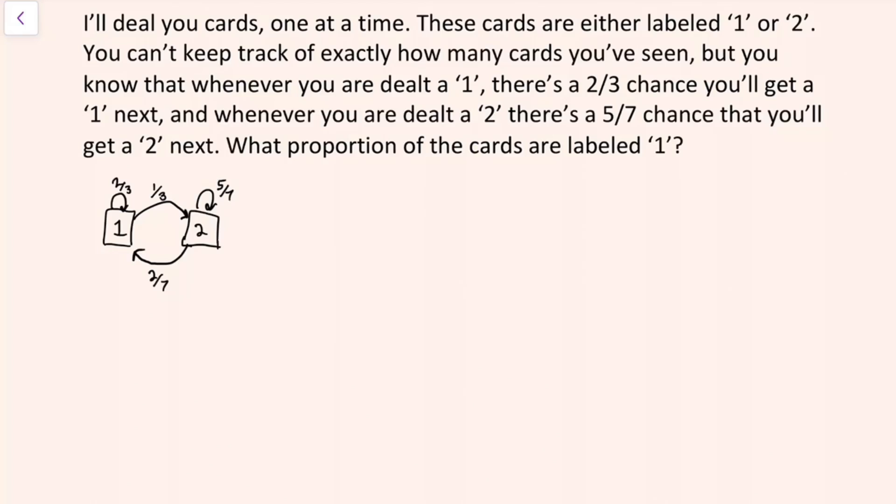Since we're looking for a proportion of cards that end up being labeled one, let's come up with variables for the proportion of cards that are one and the proportion of cards that are two. And since there's only two possible things that the cards could be, we know that the sum of these two proportions is going to be one. So we have one equation, two unknowns, so we're going to need another equation to figure out this proportion of cards that are labeled one. And there's two that we can use. First we can formulate the dynamics for the proportion of cards that are labeled one, or likewise we could do this for the proportion of cards that are labeled two. For the solution, I'm going to use these two.